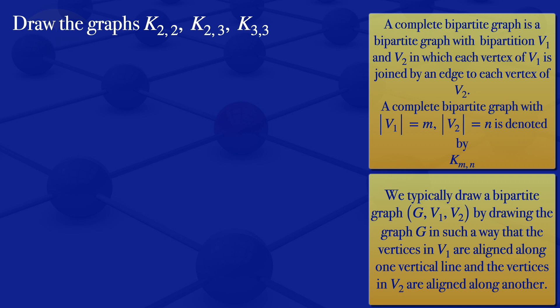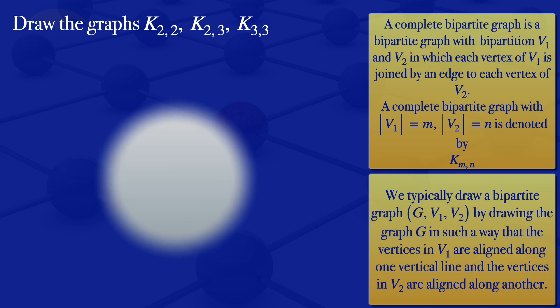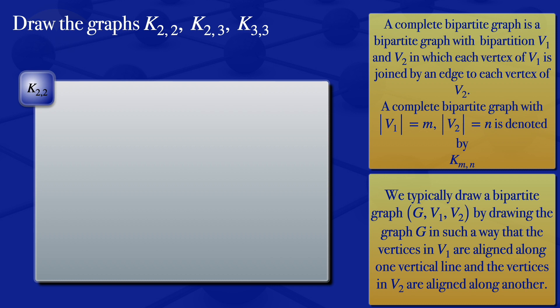I will start by drawing K2,2. When we look at K2,2, we are saying that it is partitioned into two subsets V1 and V2. The first subset has two vertices, and the second subset also has two vertices, because m is 2 and n is 2. So I will draw V1 with vertices V1 and V2 as the first partition, and the second partition has two vertices V3 and V4.